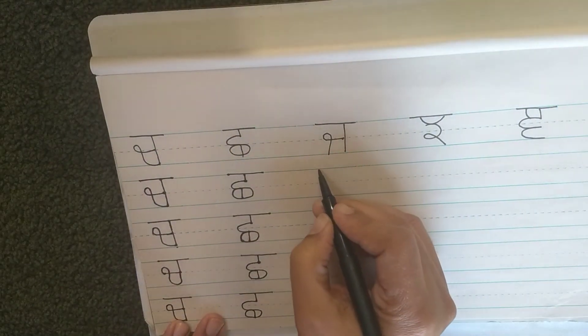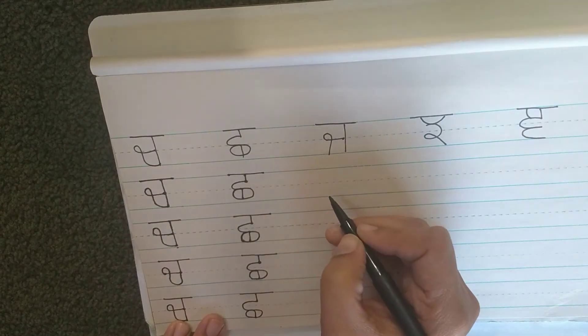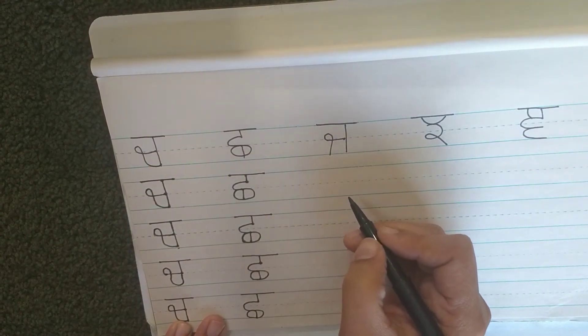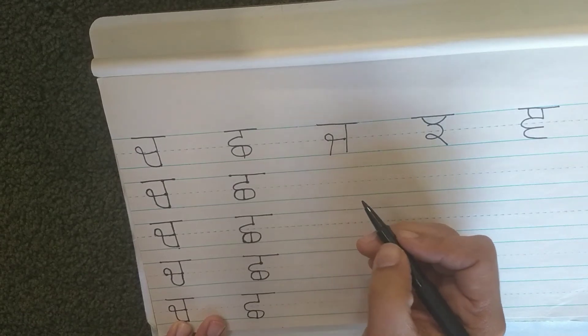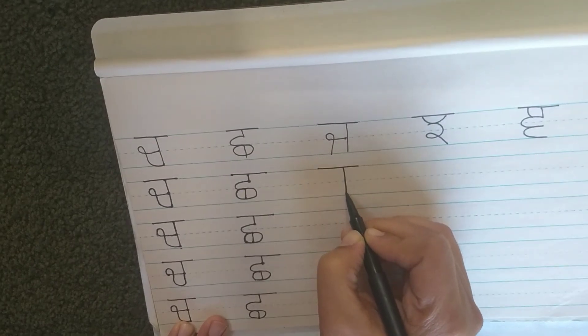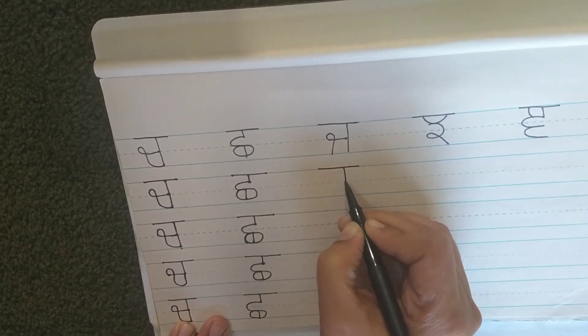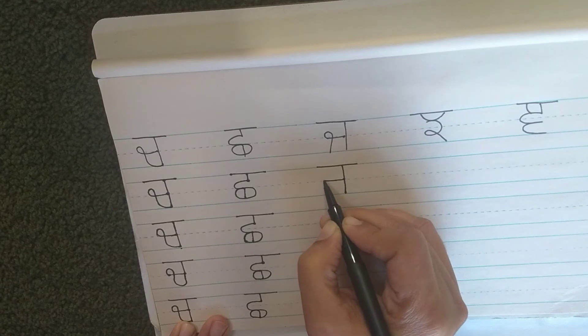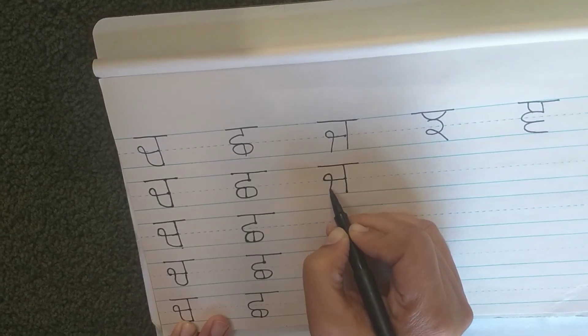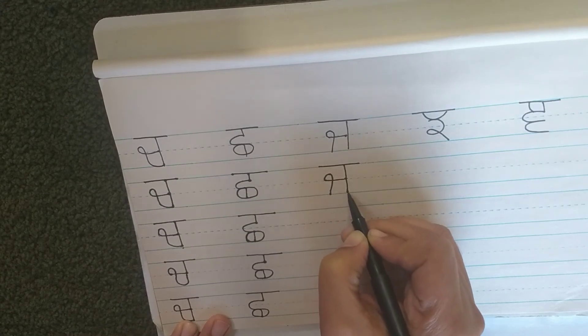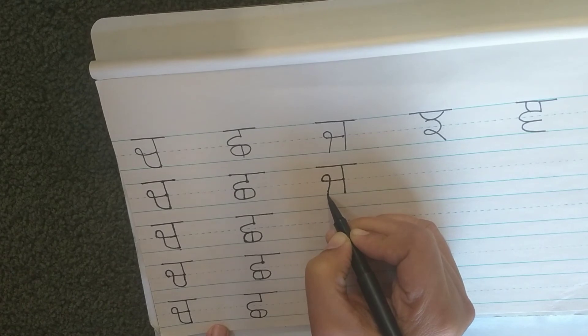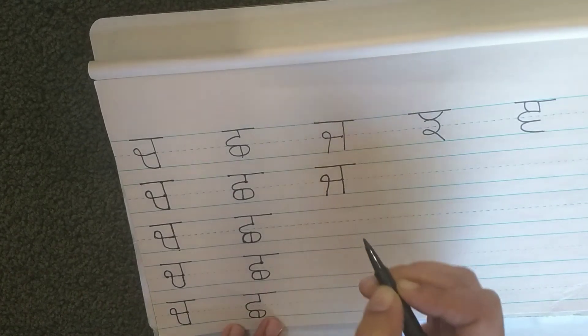Now we're going to write jaja, jaja joker like a clown, jaja jarab like your sock, jaja jug, the water jug, right? So straight line, line down, go into the middle just like chacha, and go left, loop up, cross, and straight down. If you go close it, it becomes chacha, like here. But if you just leave it down to the bottom line, it becomes jaja.